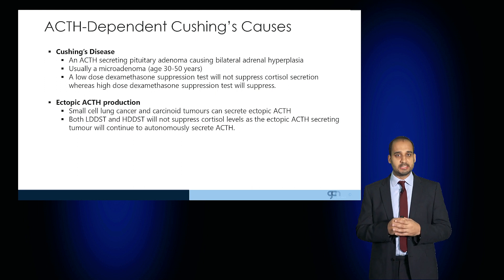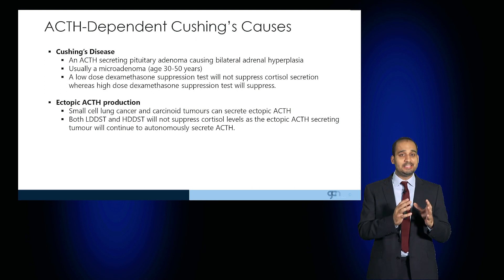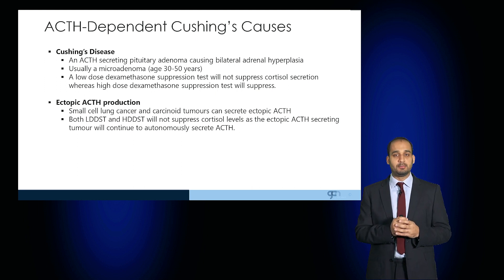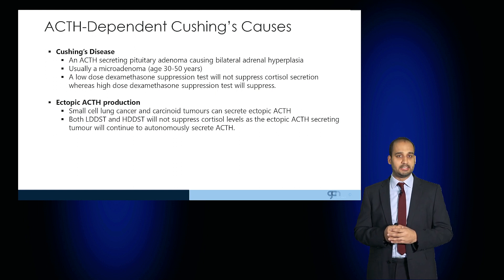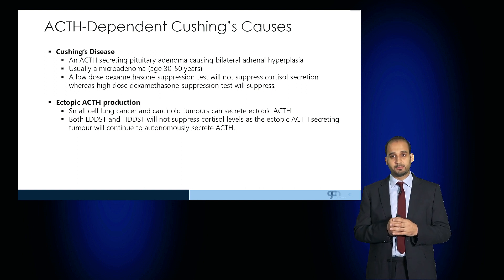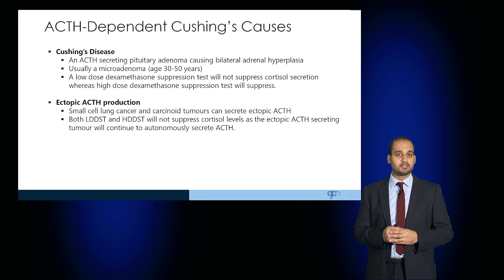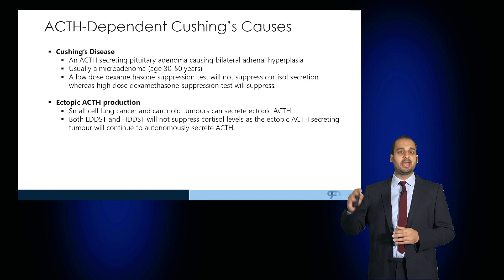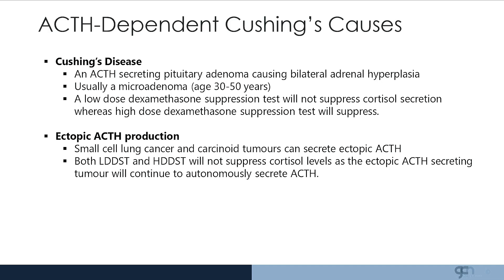Cushing's disease is where an ACTH-secreting pituitary adenoma results in bilateral adrenal hyperplasia — usually this can be a microadenoma. When the patient undergoes a dexamethasone suppression test, at low doses the cortisol secretion is not suppressed, but at higher doses the dexamethasone will suppress the pituitary from producing ACTH.